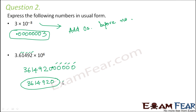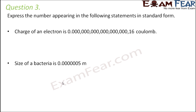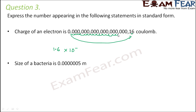Question number 3: express the numbers in the following statements in standard form. The charge of an electron is a given number of coulombs. For standard form, shift the decimal point to get 1.6, then count the jumps: 1, 2, 3, 4, 5, 6, 7, 8, 9, 10, 11, 12, 13, 14, 15, 16, 17, 18, 19 — so it is 1.6 into 10 to the power minus 19 coulombs.